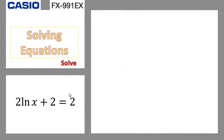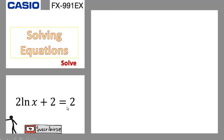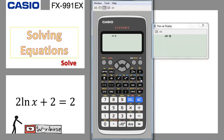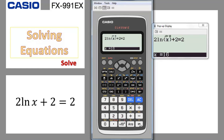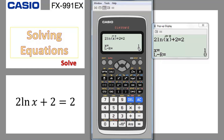Also, we can do a similar example: 2 ln(x) plus 2 equal to 2. Here is the ln key. So we have 2, ln, variable x, close the parenthesis, plus 2, alpha equal, and we have 2 here. Do shift calc — even if you leave 16 there or change it to 1, it's not going to make any change — you get x equal to 1.